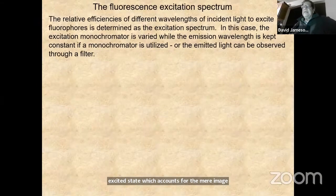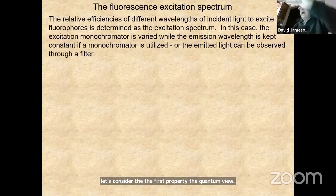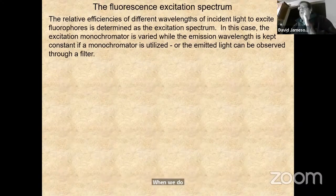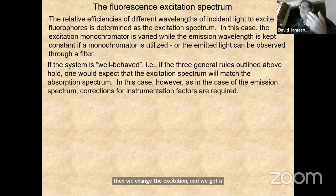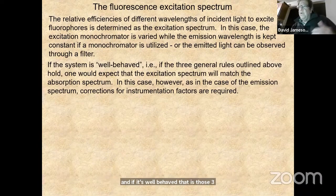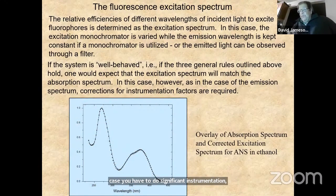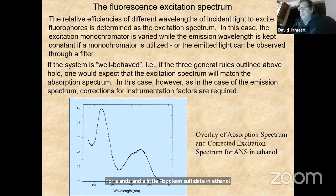For the excitation spectrum, we fix the emission monochromator at a certain wavelength and scan the excitation wavelength. If the molecule is well-behaved, the excitation spectrum should match the absorption spectrum, though significant instrumentation corrections are required. Here we see from my lab the absorption spectrum and corrected excitation spectrum for ANS — 1-anilinonaphthalene-8-sulfonate — in ethanol, and we can see that they match extremely well, as they should in most cases.